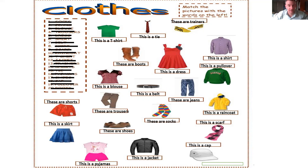These are shorts — don't forget, because you have two legs, you must use 'these'. Like these are socks. This is a scarf. This is a cap. This is a jacket. These are shoes. This is a skirt.